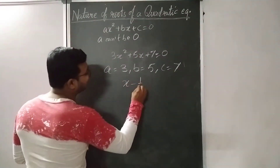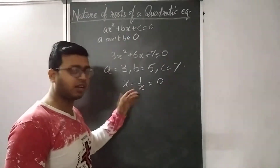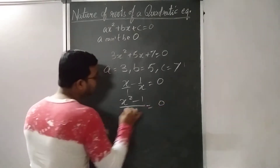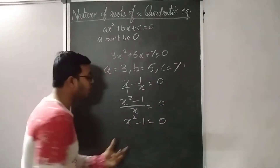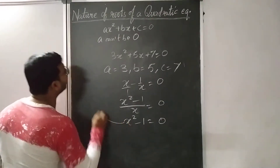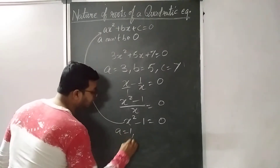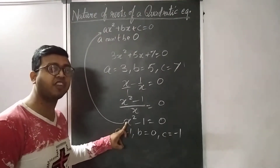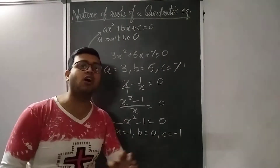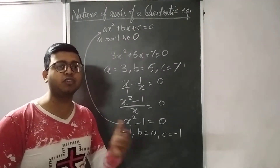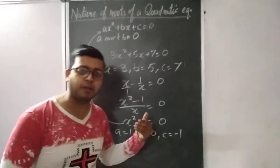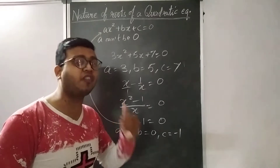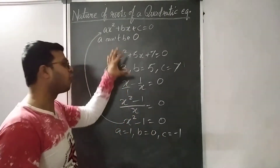Sometimes the equation looks like X − 1/X = 0, which does not look like a Quadratic Equation. But if you solve it: X² − 1/X = 0, then cross-multiply to get X² − 1 = 0. Now this is also a Quadratic. Comparing with the general form, the value of A is 1 because the coefficient of X² is 1; B is 0 because there is no X term; and the constant C is −1. This is the method to find the values of A, B and C from the given Quadratic Equation.